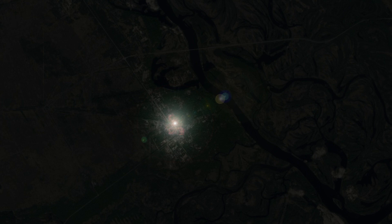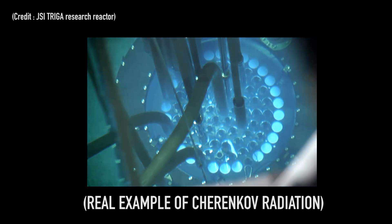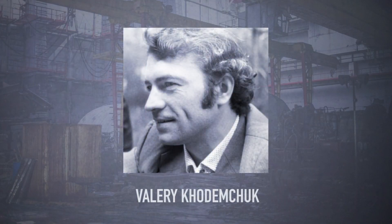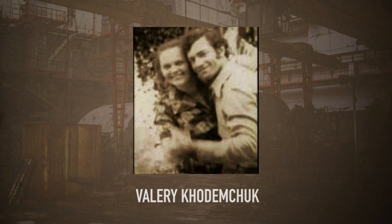The surrounding air glows blue, as neutrons ionize the air. This is known as Cherenkov radiation. At the time of the explosion, 35-year-old engineer Valery Khodemchuk is manning the circulating pump engine room. He's killed immediately by the blast, becoming the first casualty of the Chernobyl incident.